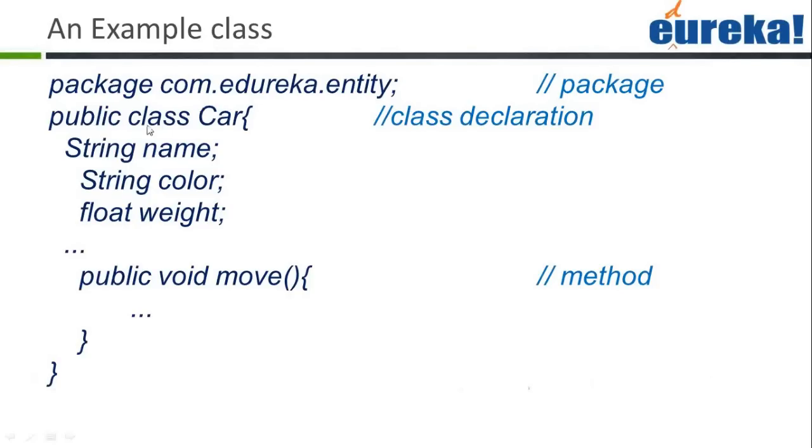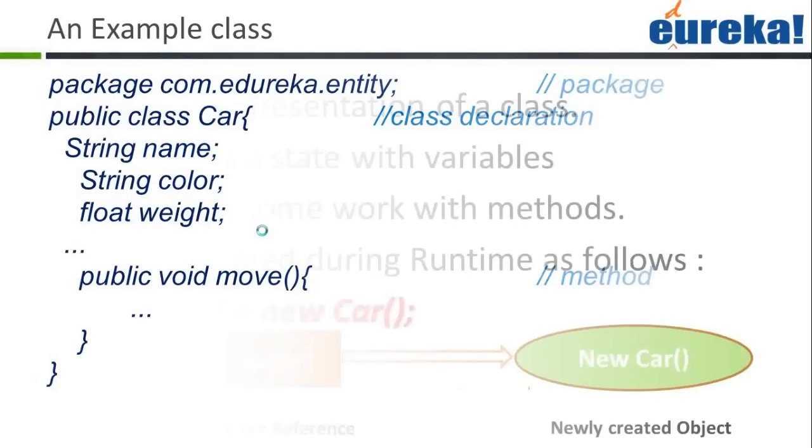Then we have the public class car. Car is the name of the class, then we have the various attributes of the class which is name, color, and weight. Then we have various methods that work on this particular class, which is void move, so all the objects of this class will be actually using this.